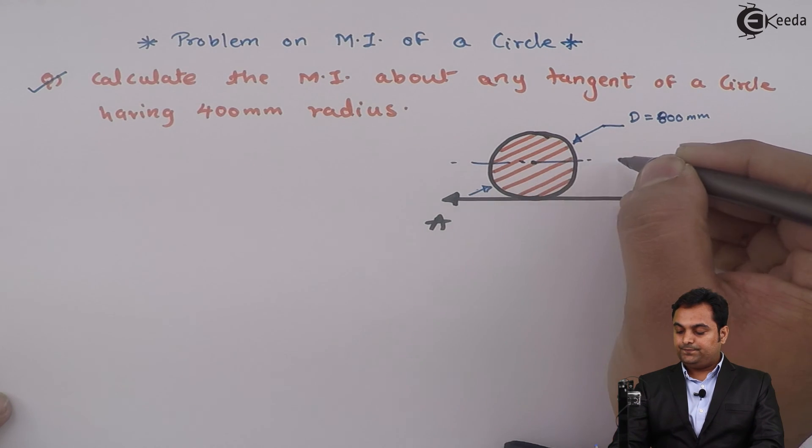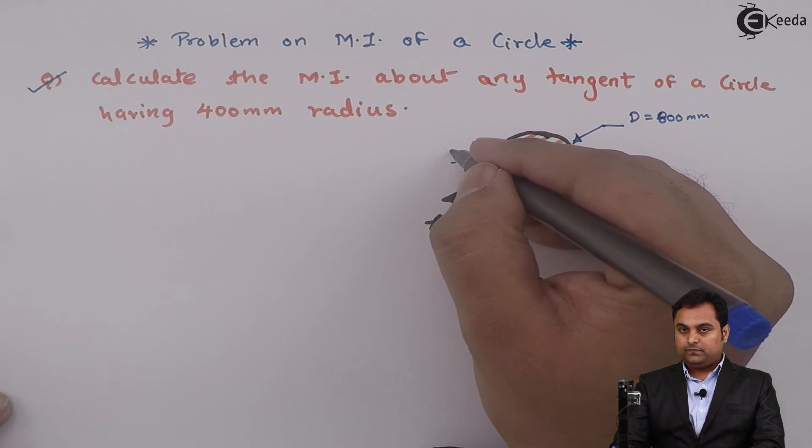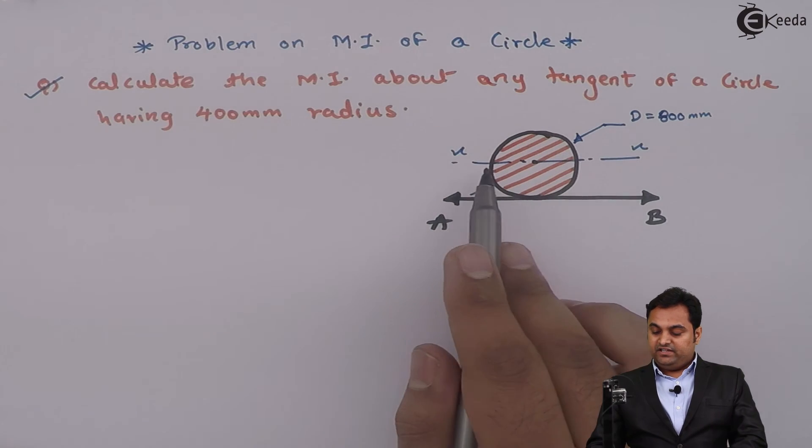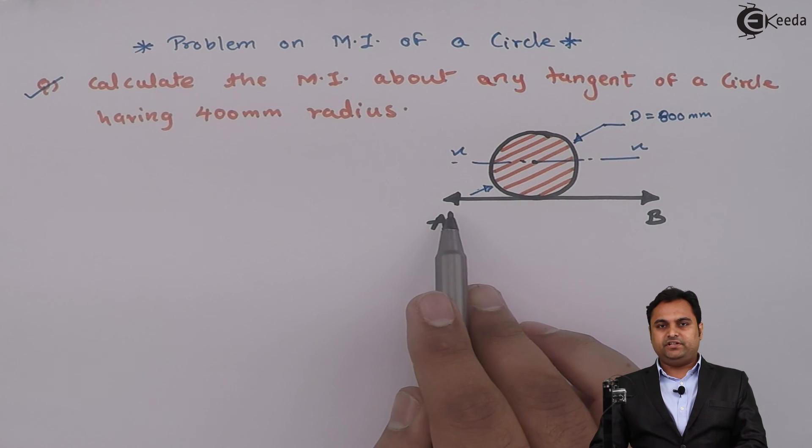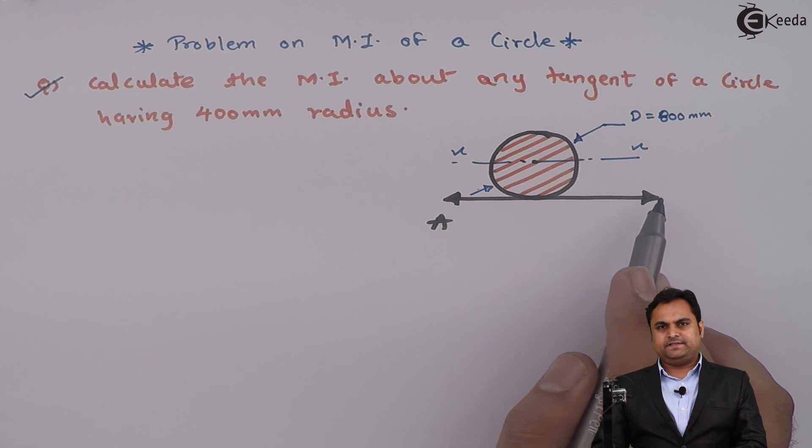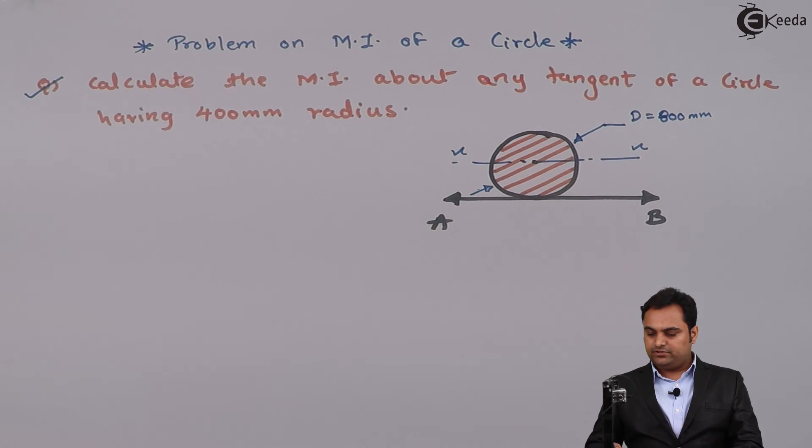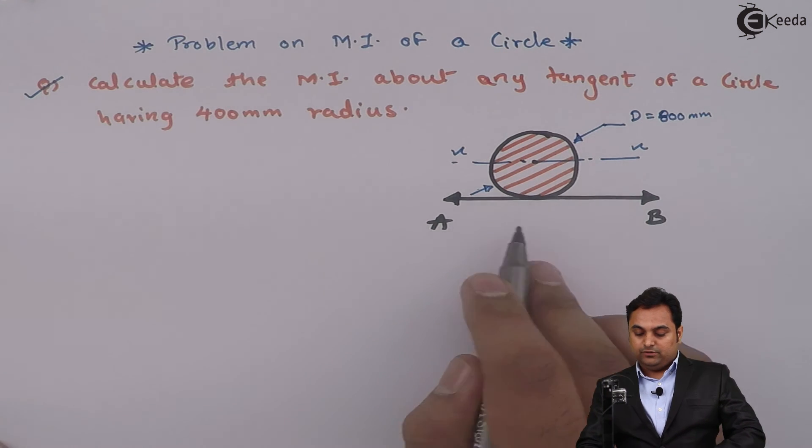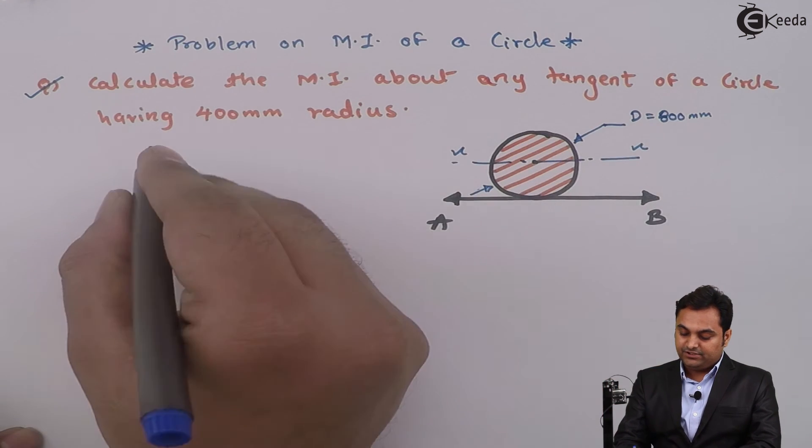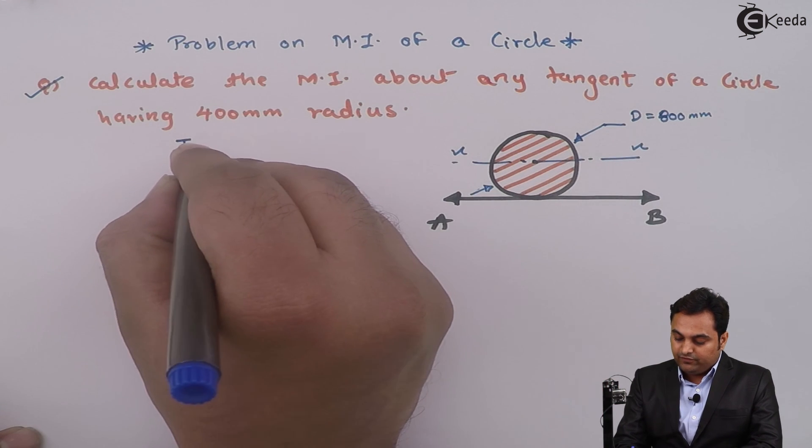Next, if we look into the question, here I have x-axis and the tangent which I have taken is parallel to x. We can solve it by using the tangent parallel to y also, that way is also correct. And we have to calculate the MI about any tangent.